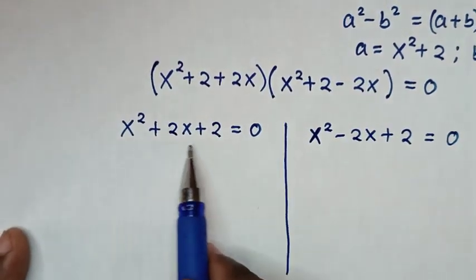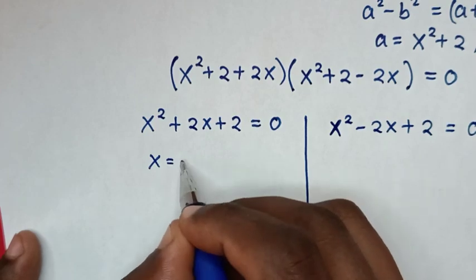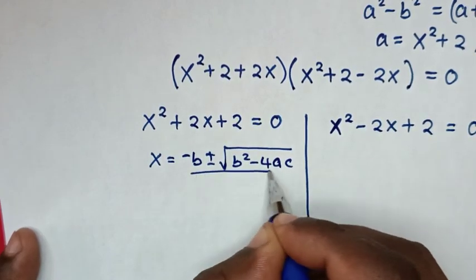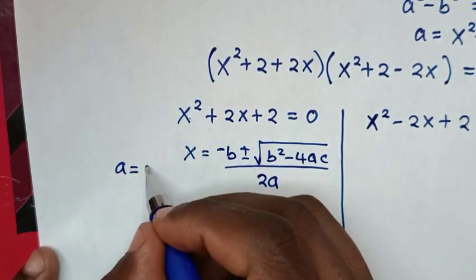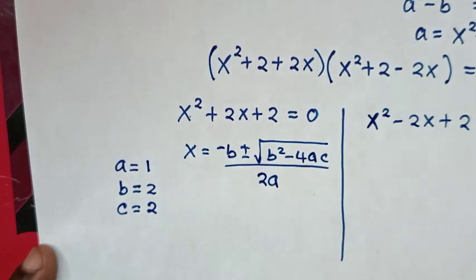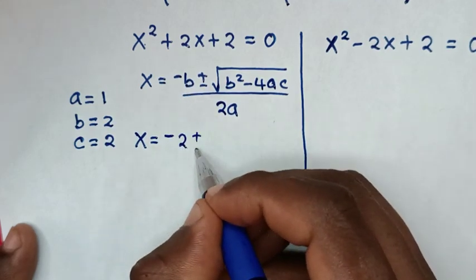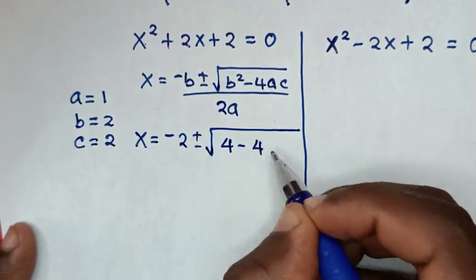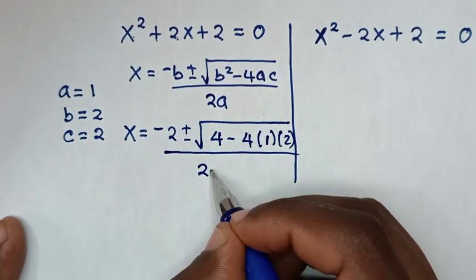We'll solve the first solution, which is a quadratic equation, by the quadratic formula: x equals negative b plus or minus square root of b squared minus 4ac, over 2a. So a equals the coefficient of x squared, which is 1; b equals the coefficient of x, which is 2; and c equals the constant, which is 2. Then it will be x equals negative 2 plus or minus square root of 2 squared, which is 4, minus 4 times 1 times 2, over 2 times 1.